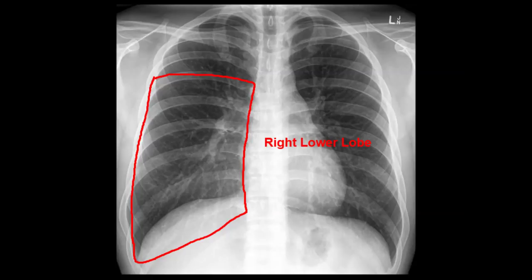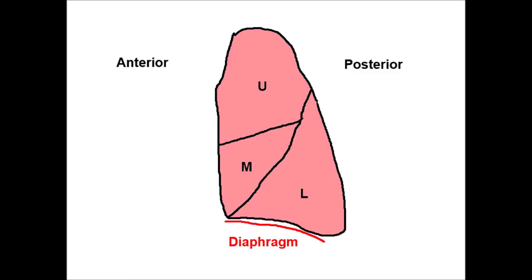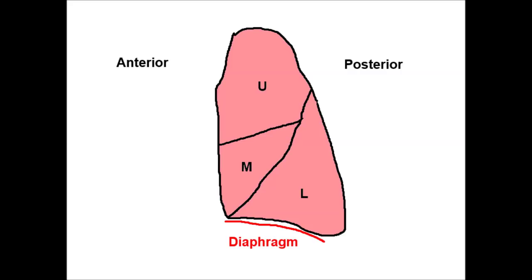This is because of the three-dimensional structure of lungs. The lower lobe occupies a space posterior to the other two lobes, and also to the dome of the diaphragm. It doesn't touch the right heart border like the middle lobe does, because the heart is anterior in the chest.